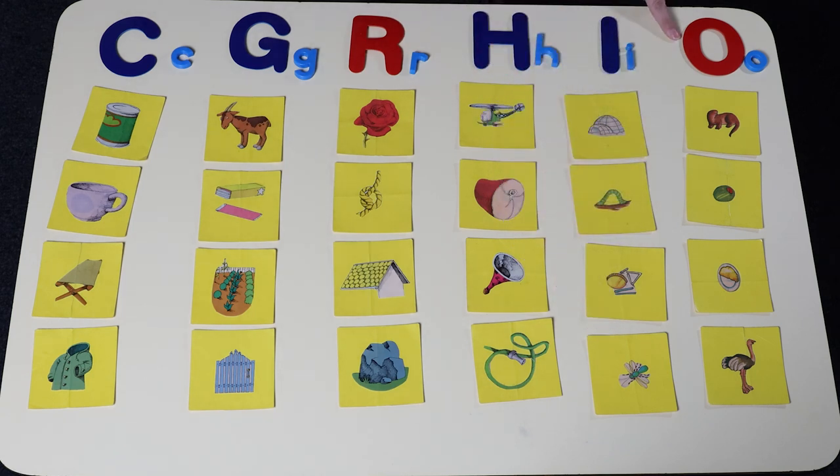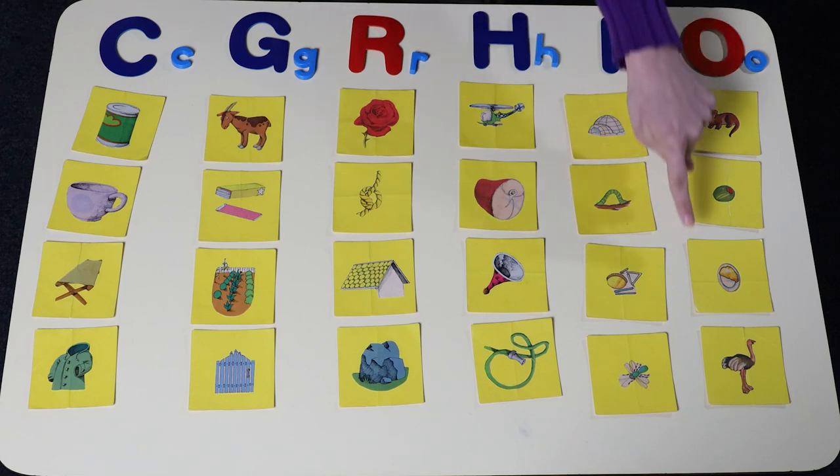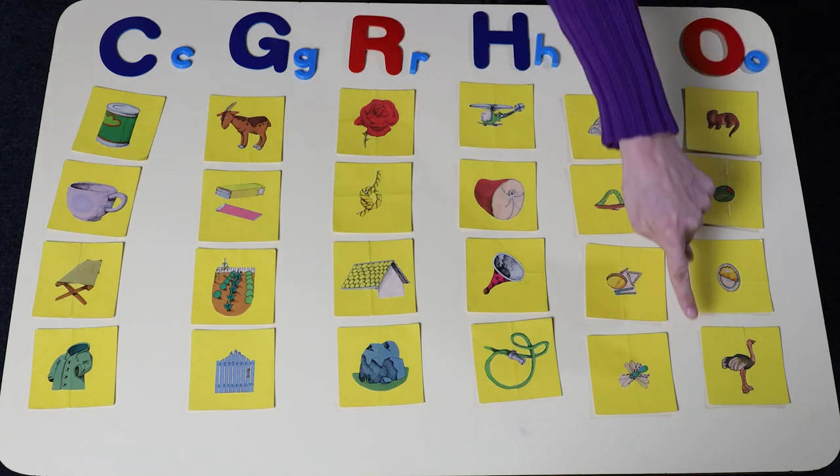The name of this letter is O. The sound it makes is O, O. Otter, O, olive, O, omelet, O, ostrich.